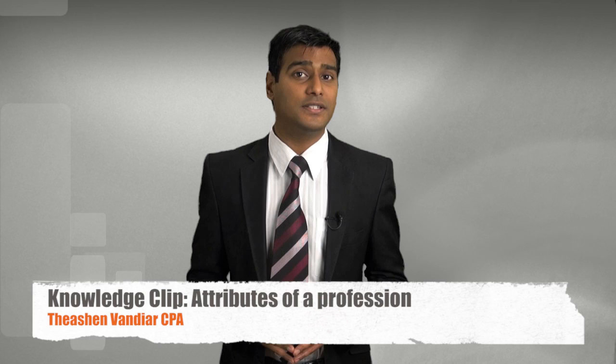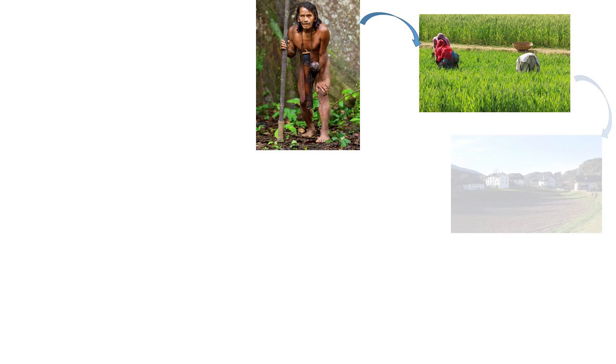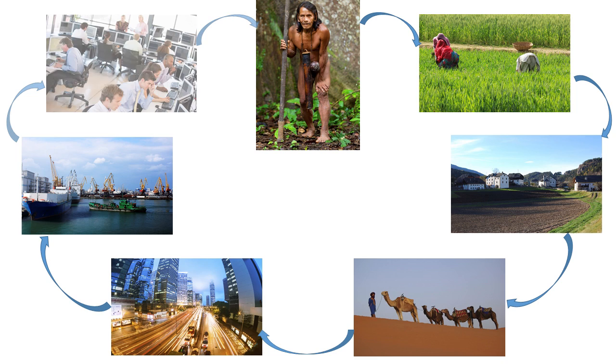Our roles, jobs and functions in society evolved from nomadic hunting and gathering to farming and agriculture in established settlements. Trade routes were established and life and business became more complex. Unlike the jobs performed by the first humans, ours are more complex and can be classified in a number of different ways.